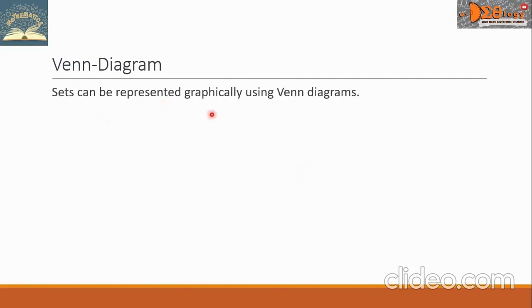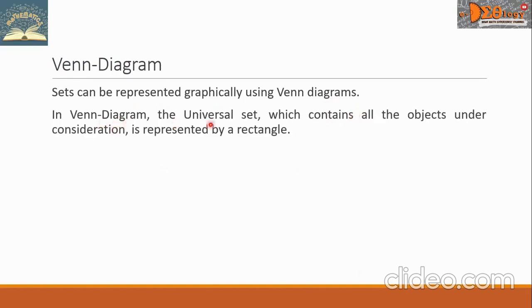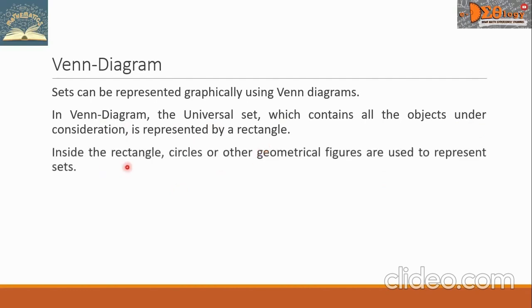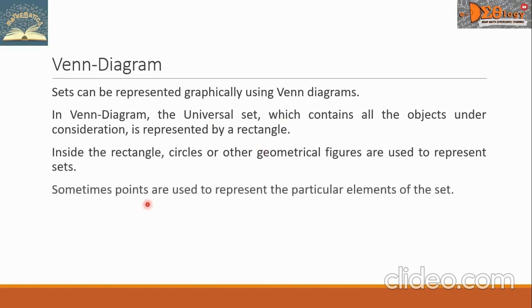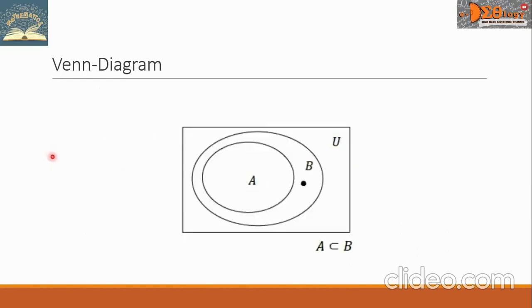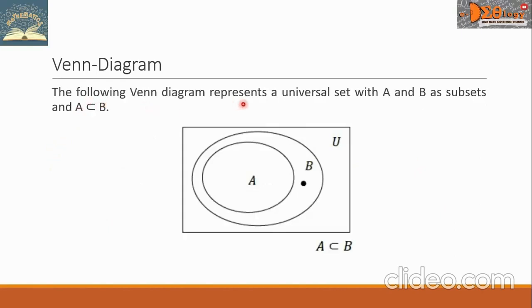Let's discuss the Venn diagram. Sets can be represented graphically using Venn diagrams. In a Venn diagram, the universal set, which contains all the objects under consideration, is represented by a rectangle. Inside the rectangle, circles or other geometrical figures are used to represent sets. Sometimes, points are used to represent the particular elements of the set. The following Venn diagram represents a universal set with A and B as subsets, and A is a subset of B.